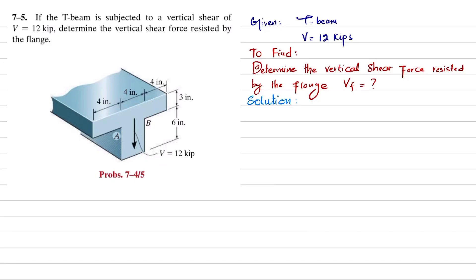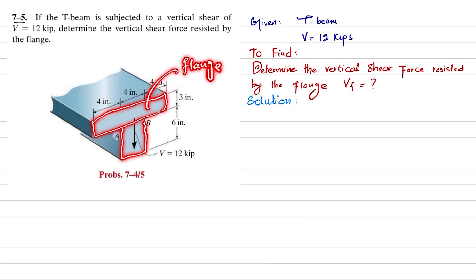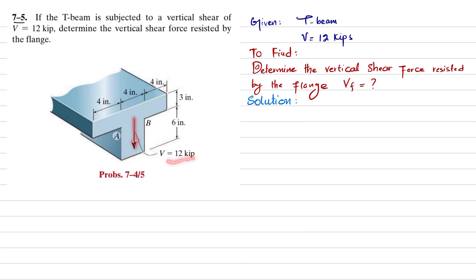Welcome back. Problem 7-5. The statement is that if the T-beam is subjected to a vertical shear of 12 kips, determine the vertical shear force resisted by the flange. The T-beam has a width of 12 inches and a total height of 9 inches. The top portion is known as the flange while the lower portion is known as the web. A shear force of 12 kips is applied and we need to find the vertical shear resisted by the flange.